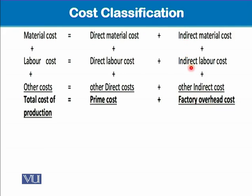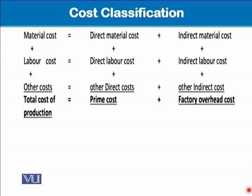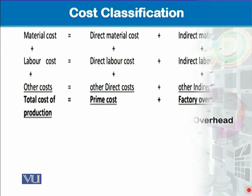Factory overhead cost covers all the indirect material cost and indirect labor cost. One thing to note is that other costs should also be considered — costs other than direct material, direct labor, indirect material, and indirect labor. This other cost can be other direct costs or other indirect costs.